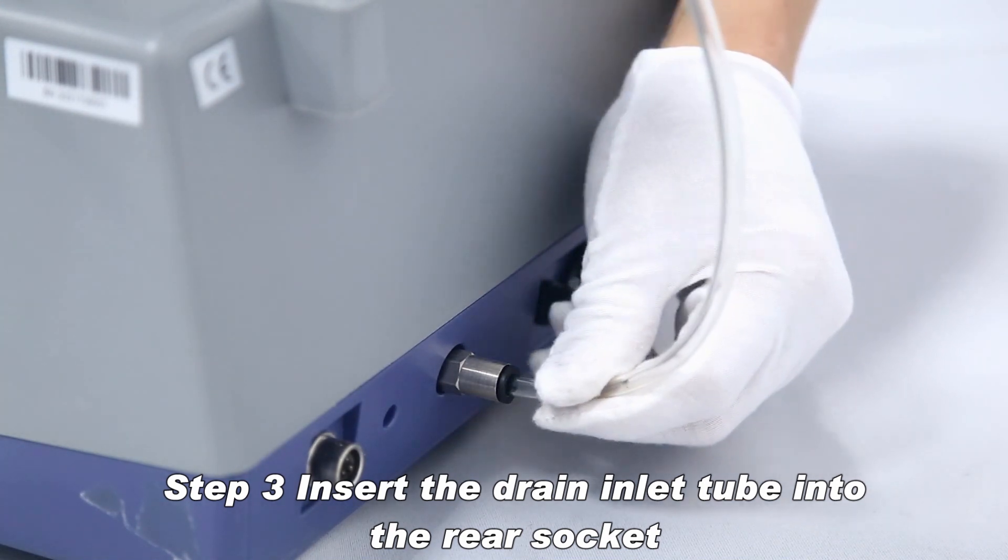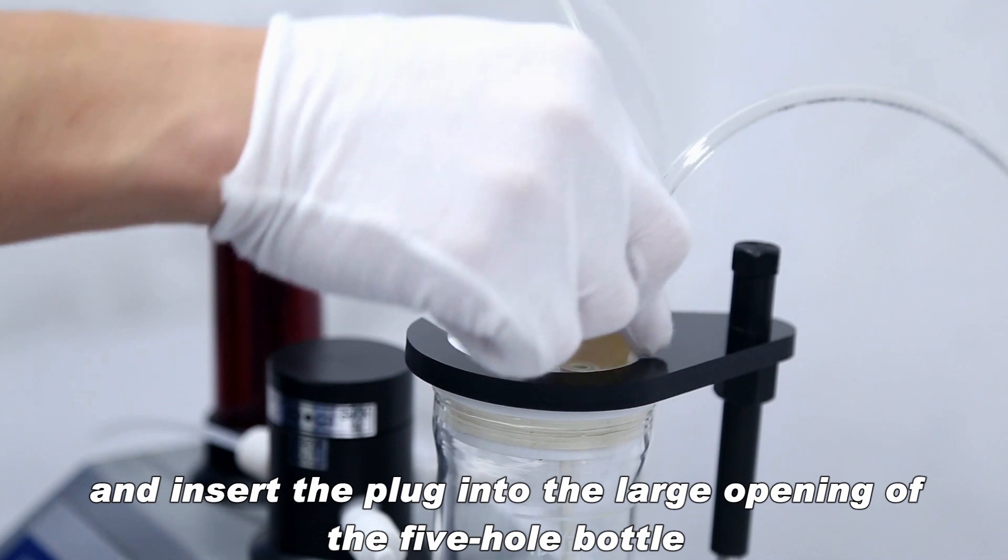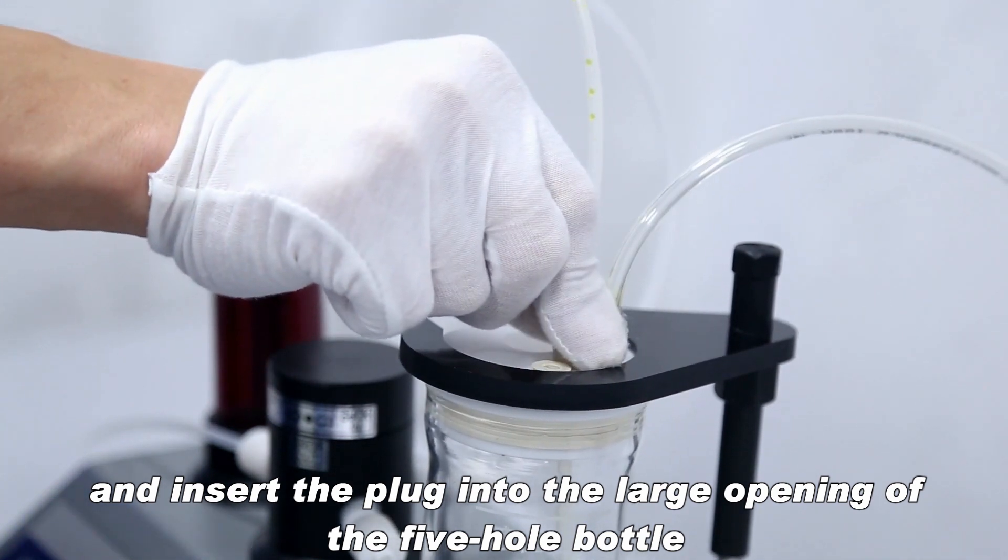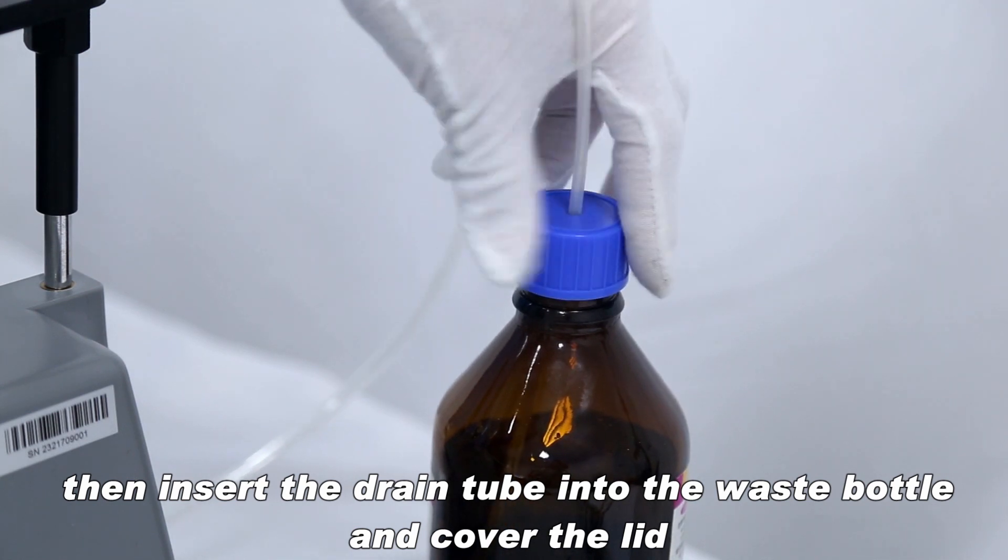Insert the drain inlet tube into the rear socket and insert the plug into the large opening of the 5-hole bottle. Then insert the drain tube into the waste bottle and cover the lid.